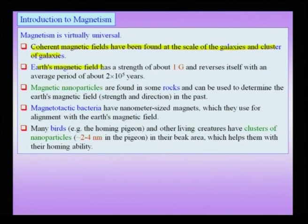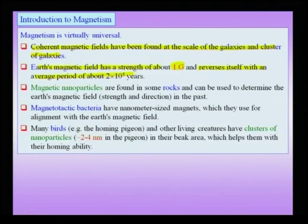Earth itself is a magnet. Earth's magnetic field, which is not very strong, has a strength of about 1 gauss, and interestingly it reverses itself with an average period of about a million years. The period is an average — some reversals can be shorter or longer. As we talk today, perhaps Earth's magnetic field is itself undergoing a reversal, with the North going to South and South going to North.